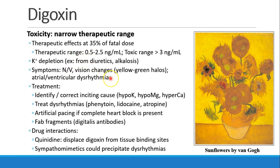Symptoms of toxicity include nausea, vomiting, vision changes, and some dysrhythmias. This is a picture of sunflowers by Van Gogh, and some people think that his yellow period may have been a manifestation of digoxin toxicity.